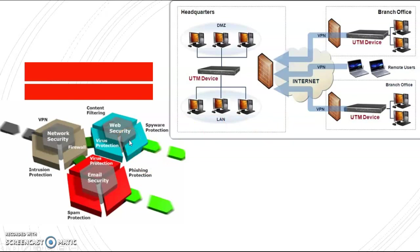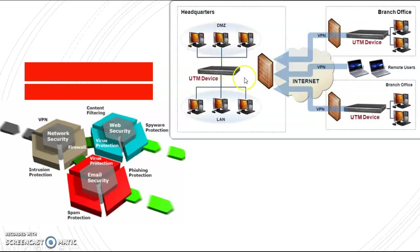Here is an example of a UTM system. Between a headquarters and a branch office, each uses a UTM device to combine security functions and make communication happen. The UTM device essentially acts as the firewall to handle communication within the network.